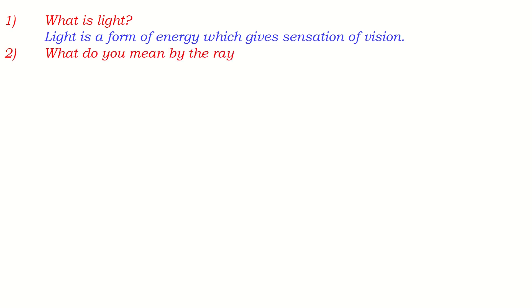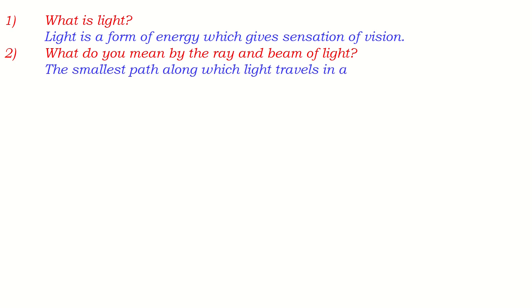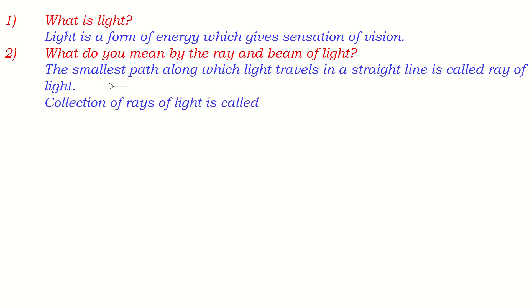Next question: what do you mean by the ray and beam of light? This is a very common and primary term related to light. The smallest path along which light travels in a straight line is called a ray of light. The arrow mark represents the direction. A collection of rays of light is called a beam of light — that is, a group of rays of light is a beam of light.